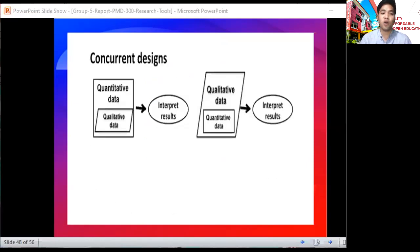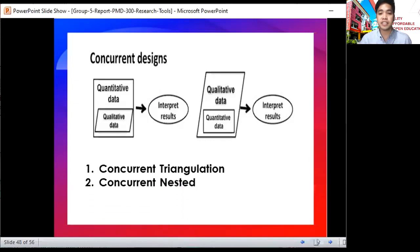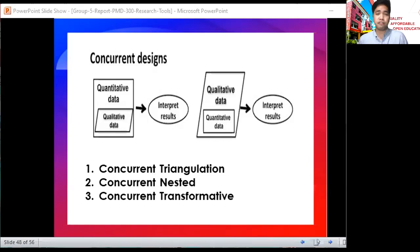The third design is concurrent design, classified into three. We have concurrent triangulation, which means two or more methods are used to confirm, cross-validate, or corroborate findings within a study. Data collection is concurrent. The second is concurrent nested, a nested approach that gives priority to one method while another is embedded or nested. And finally, concurrent transformative, the use of theoretical perspective reflected in the purpose and research questions to guide all methodological choices.